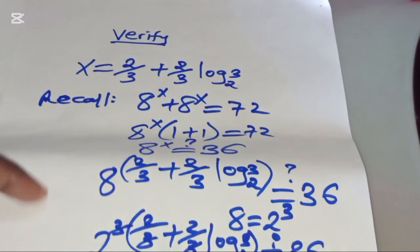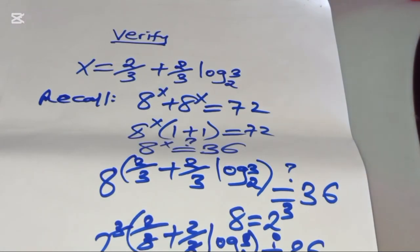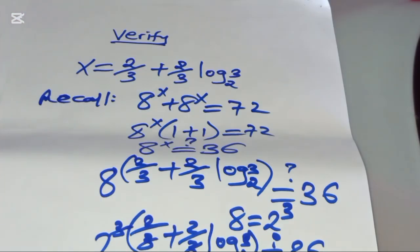This affirms that the value of x, which is 2 over 3 plus 2 over 3 times log 3 to base 2, actually satisfies the equation. If it is your first time coming across my videos, please like and subscribe. See you in the next video, bye bye.